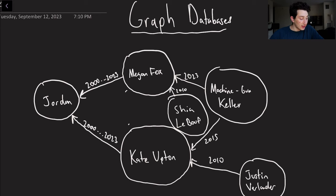So you've got Shia LaBeouf, Machine Gun Kelly of course going to shoot his shot with both, and then Justin Verlander who to my disappointment is actually now married to Kate Upton. So the graph database video itself is mostly inspired by Neo4j which we'll talk about towards the end of this one. But for now let's think about this a little bit more abstractly.